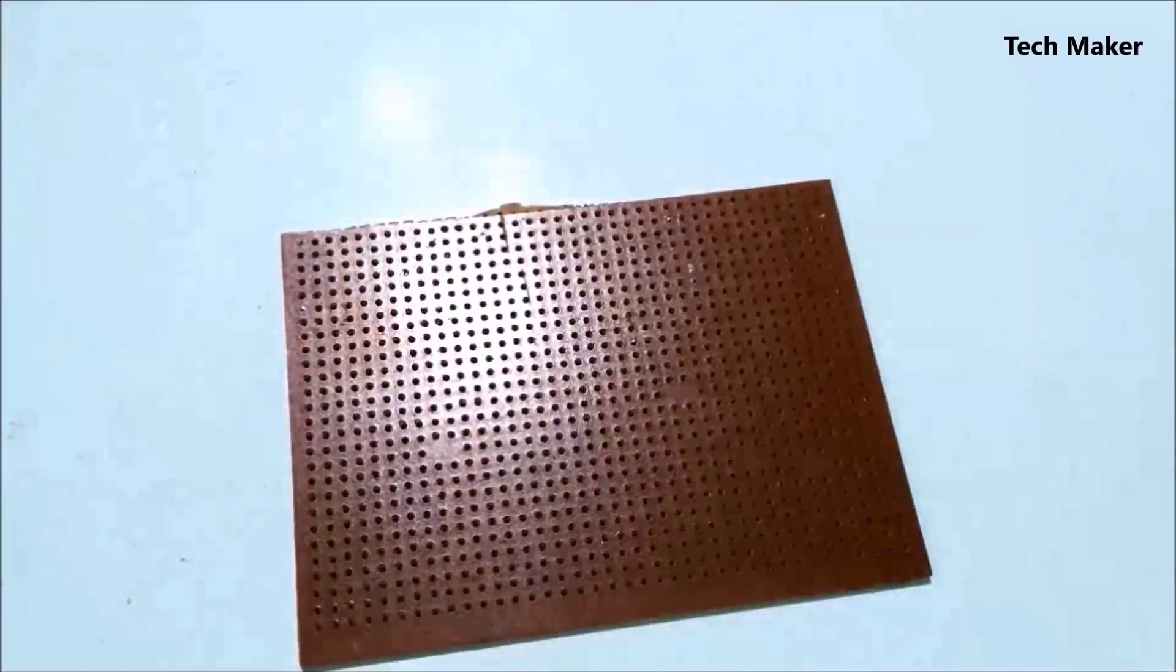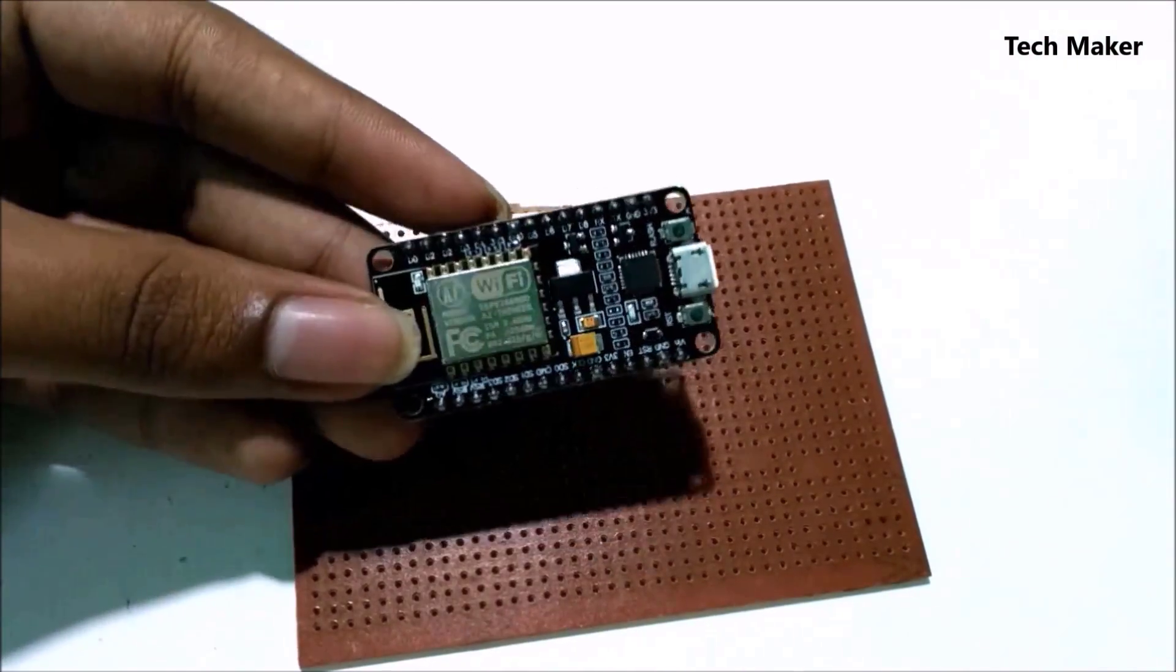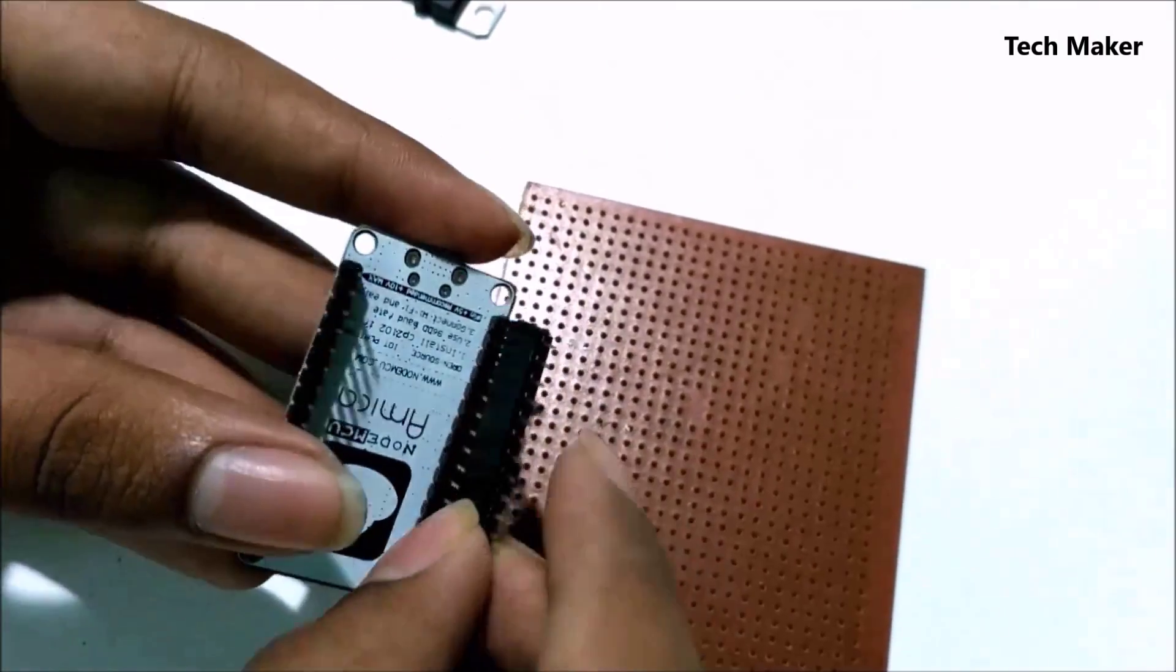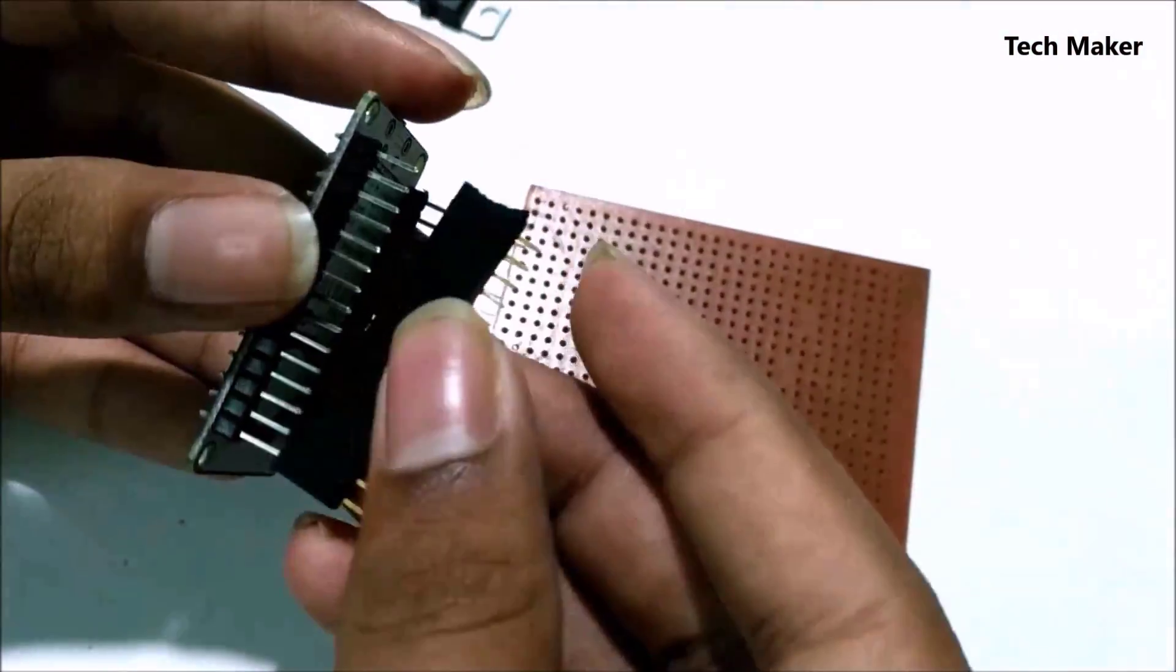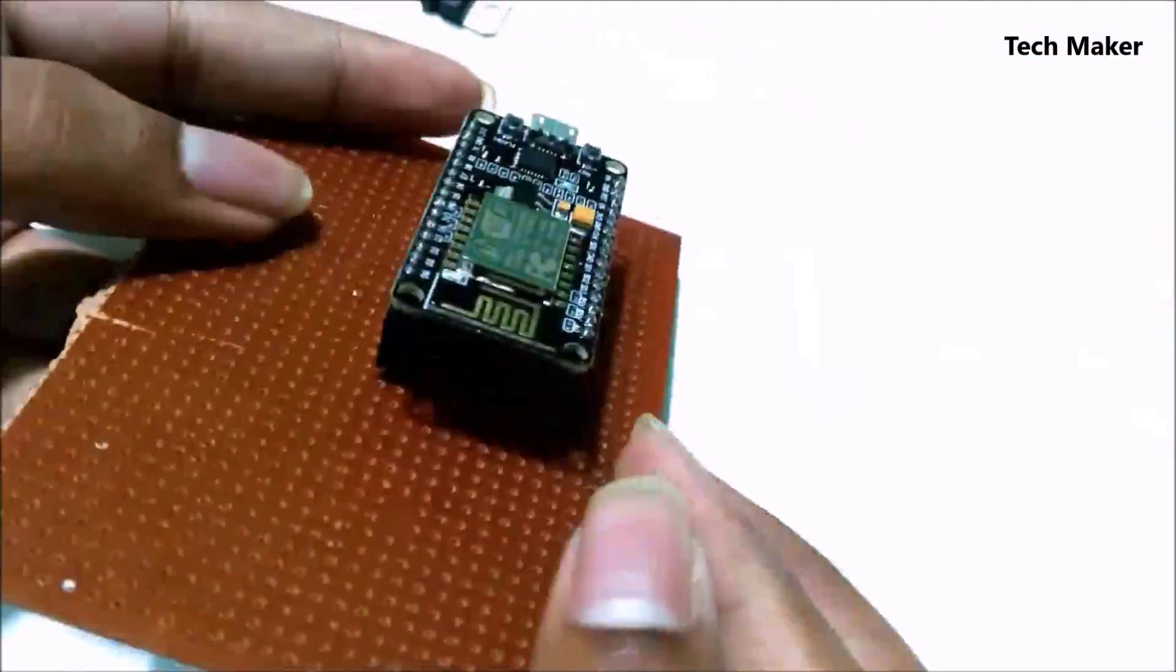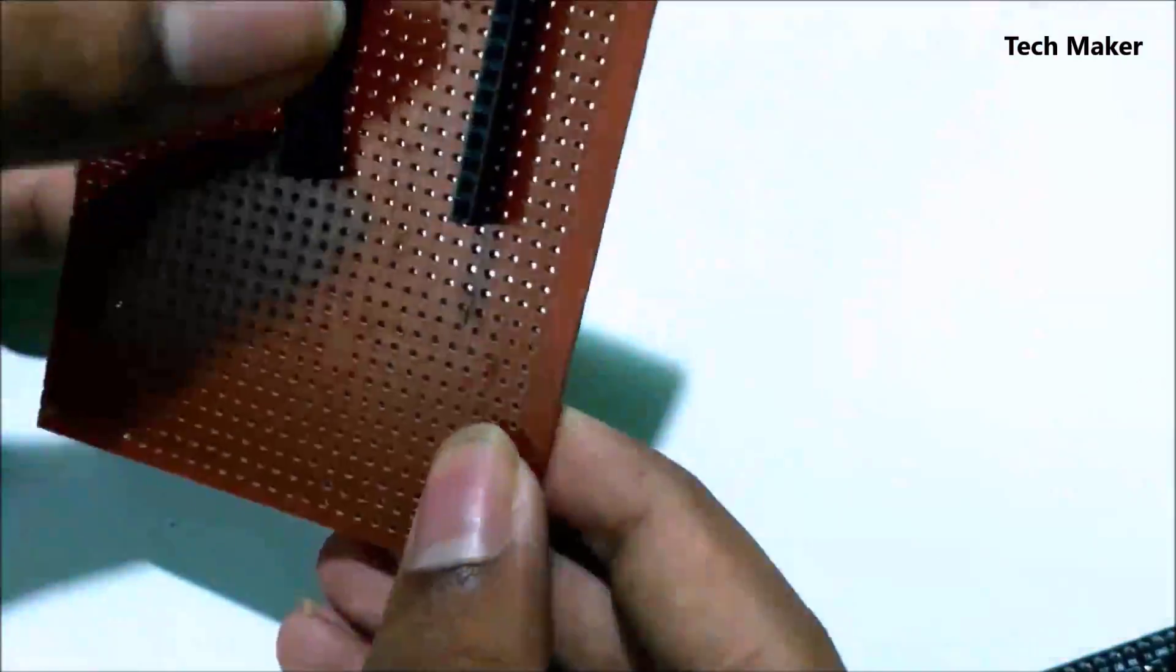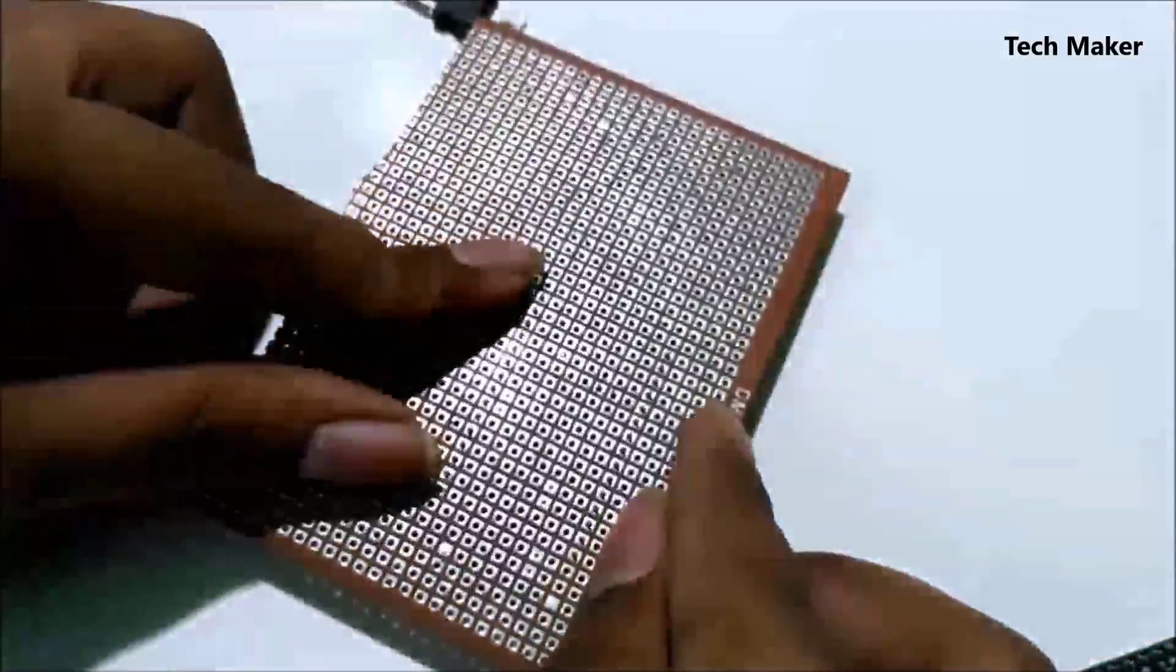First, take a perf board. This is an ESP8266 module. Insert the female header pins to the MCU and fix it on the perf board. This is to check the size. Now solder these female header pins to the perf board.